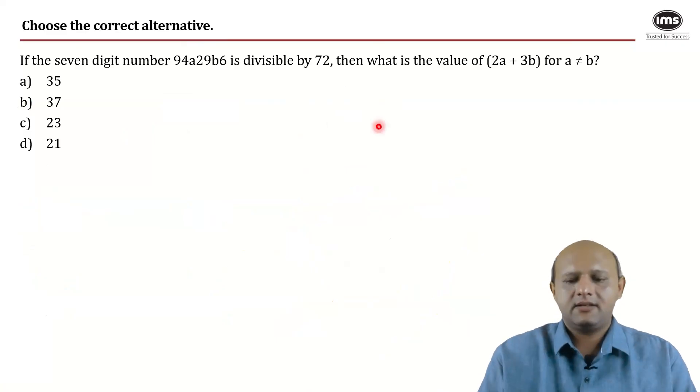Okay, so let us check the next question, which is evidently a question on divisibility rules. It says, if the seven digit number 94A29B6 is divisible by 72, what is the value of 2A plus 3B, given that A is not equal to B.